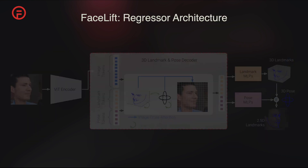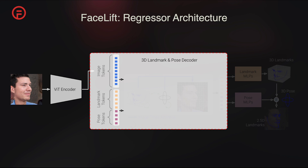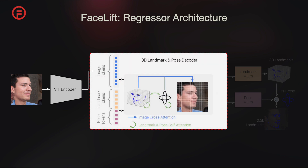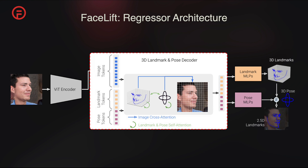Our architecture involves passing the image through a ViT encoder, which is then passed into a decoder that processes image tokens along with learned landmark and pose tokens. In each decoder block, landmark and pose tokens cross-attend to the image tokens, as well as self-attend amongst the landmark and pose token set. Finally, landmark and pose tokens pass through MLPs, and the 3D landmarks and the pose are predicted and projected to obtain the 2.5D landmarks.